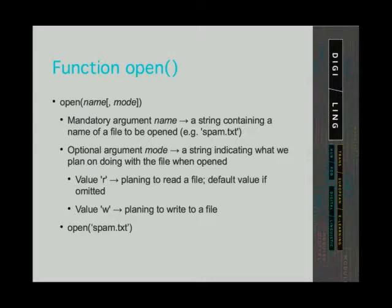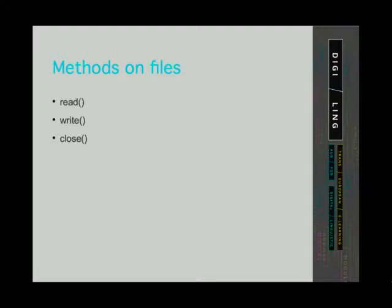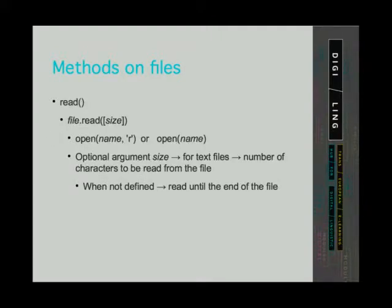If you are interested, you can always check out the Python documentation. The three methods we will cover are the read, the write, and the close method. The read method reads from the file character by character, and can be called on an open function called on a file object. The open function must have the mode argument set to R, or the mode argument must be left out, since the default value is also R. The read method has an optional argument size — for text files, it indicates the number of characters to be read. When this argument is not defined, the program reads until the end of the file. We will leave this argument out because we want the program to go through the whole file.